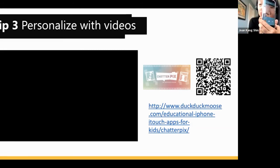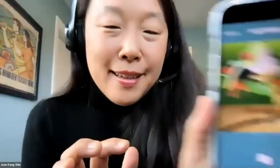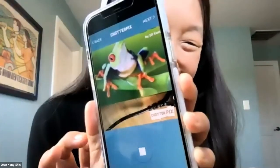In ChatterPix, you take a photo, put a mouth on the subject, and record. You can take a picture of a friend, something in a book, or an object and add language to it. For older learners — say you're learning about historical figures — you could take a picture of a historical figure and make the mouth move and talk.